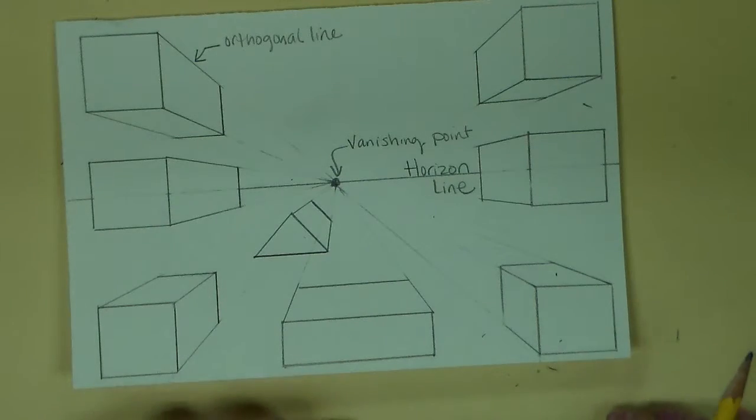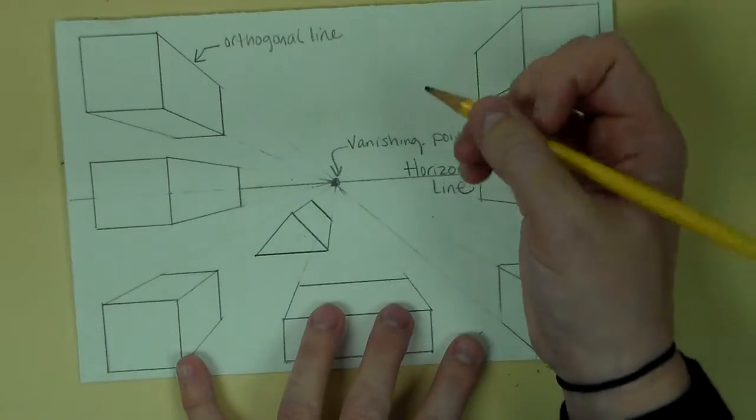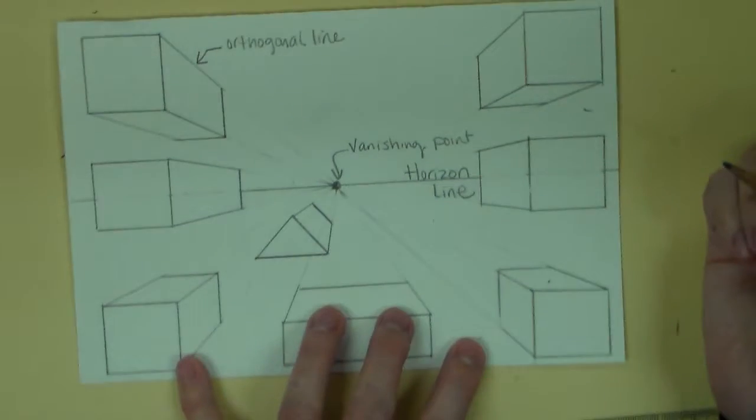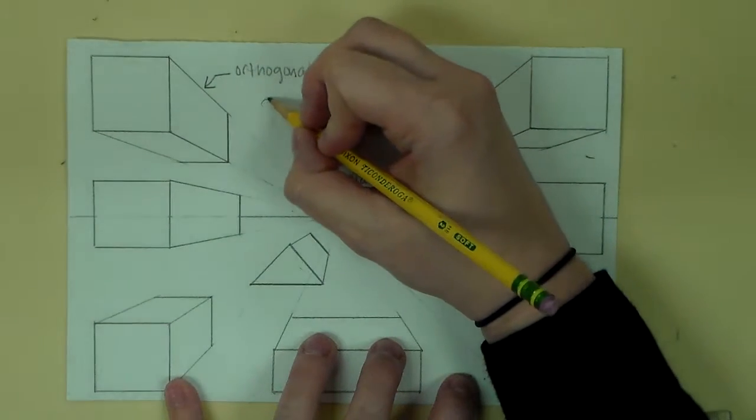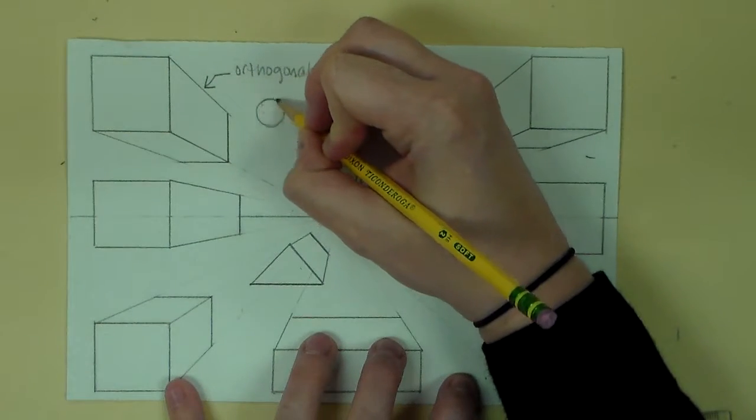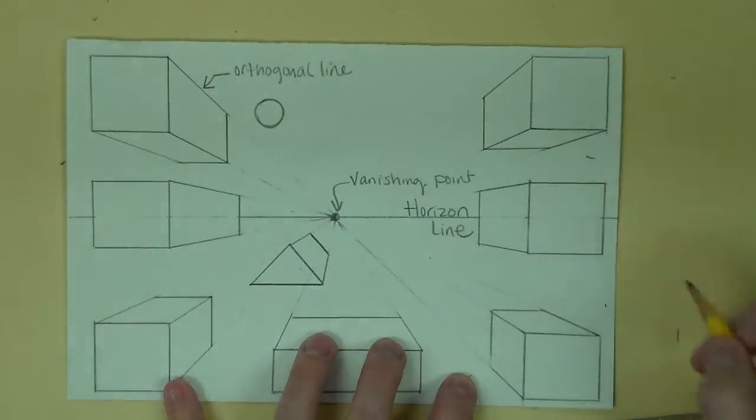This can work with round objects. So if you wanted to do a cylinder in one-point perspective, you can draw your circle—the flat side of the object.